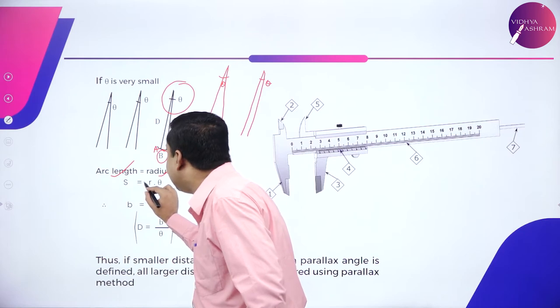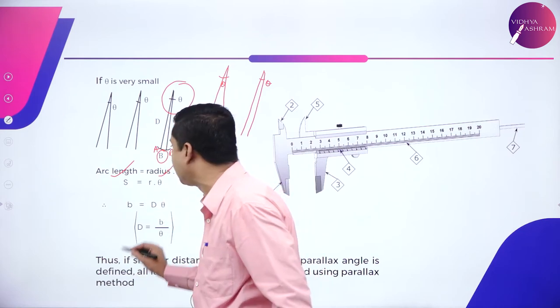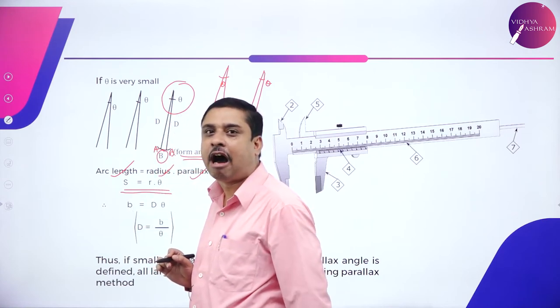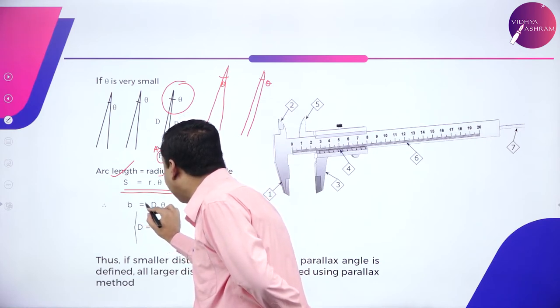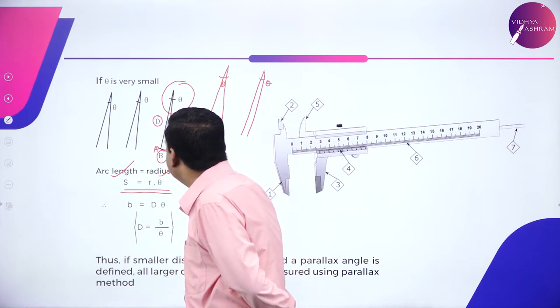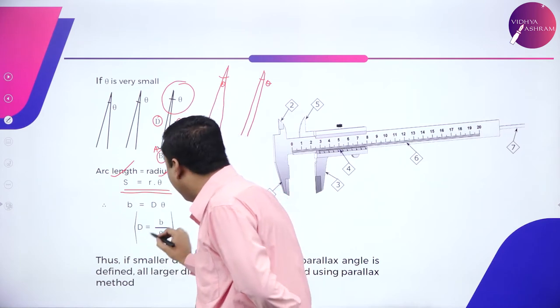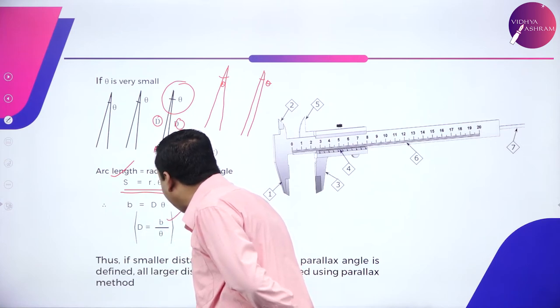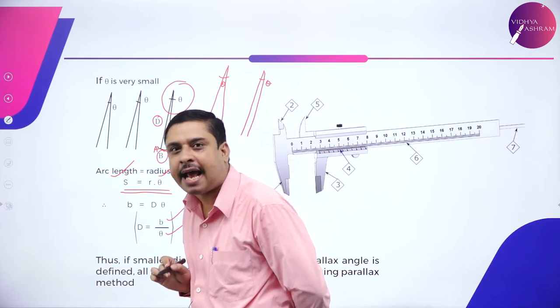Please do remember, arc length is always the product of radius into parallax angle. Generally, S equals R theta. You should have studied in your trigonometry, length of an arc. S is R theta. Here, arc length is B, radius is D,